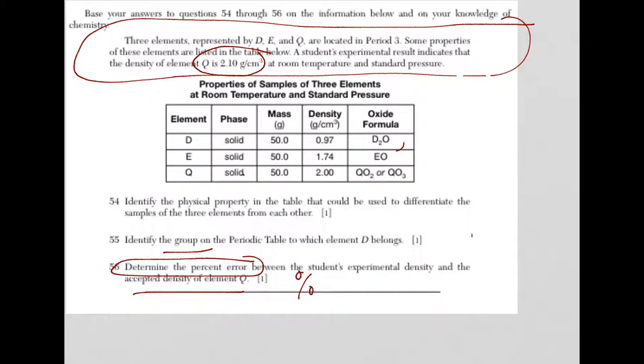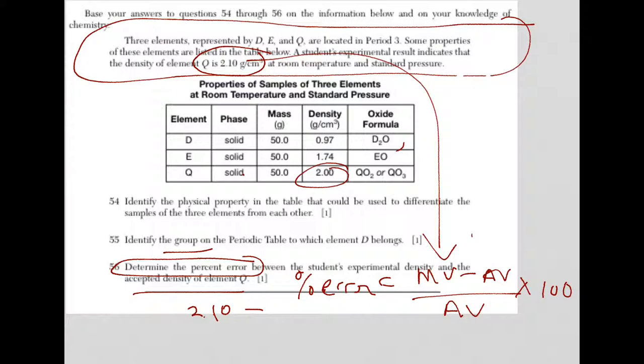So my percent error is my measured value minus accepted value divided by accepted value times 100. Plug things in exactly the way you see them. So the measured value was 2.10. That's from the student. I'm running out of room, so I'm going to put it here. It's 2.10 minus the student value for Q was 2 divided by 2 times 100.